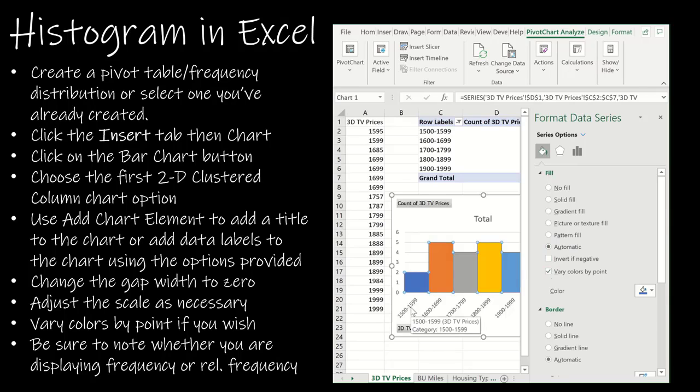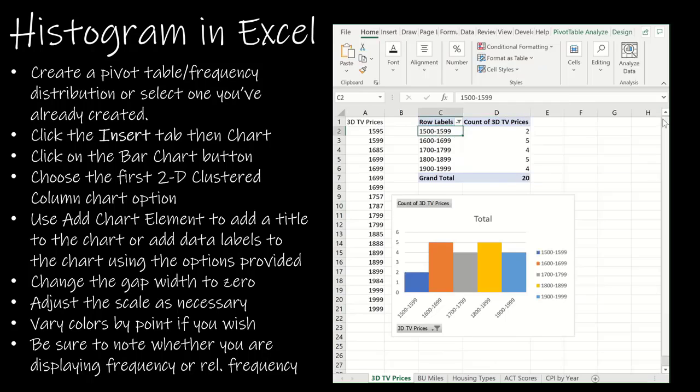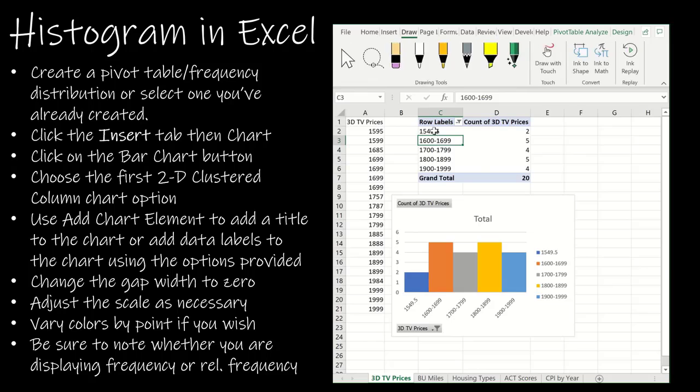And then this is where we are determining how to label each bar. So it's going to label it however you have it labeled here. I have this as 1500 to 1599. And that's what's happening here. If I had changed this to 1549.5, then that's going to automatically change there. For my purposes, we are going to leave it as 1500 to 1599. Why mess with something that's not broken?